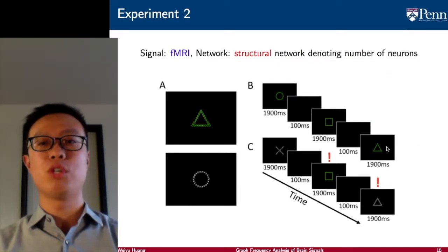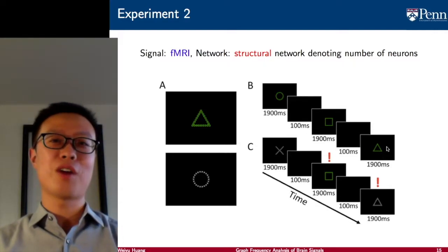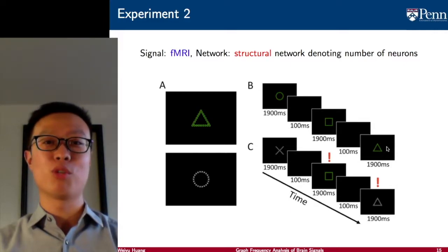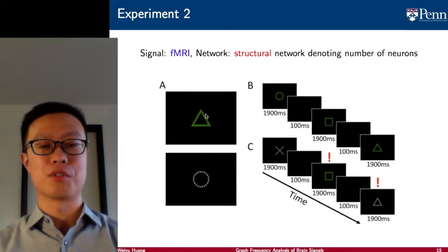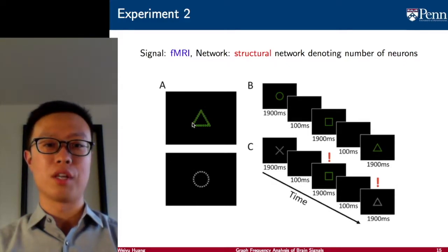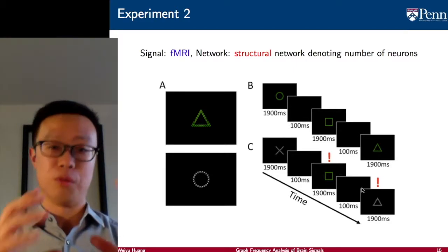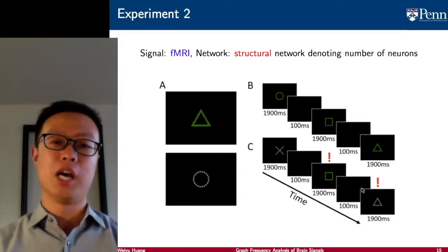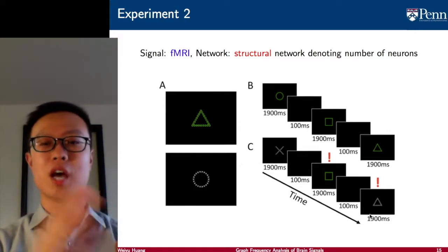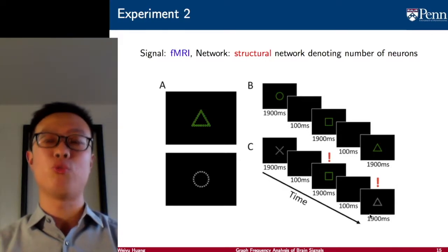We consider a different experiment motivated from switching attention. We know some of us are very good at switching attention — we can talk to our grandmother one moment and then start writing an email. This experiment is motivated by this, where we consider different types of images. For example, we have a triangle consisting of squares, and a circle consisting of crosses. When the image is green, subjects are asked to respond to the smaller pieces, which are the squares. When the image is white, subjects are asked to respond to the big picture, which is the circle. We designed two different sequences: in the first, subjects always respond to the big picture or smaller details throughout; in the second, subjects need to switch attention between smaller details and the big picture. The signal in this case is still functional MRI, and the network is the structural network representing the number of neurons between a pair of regions.